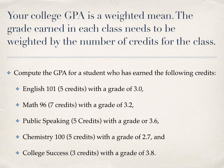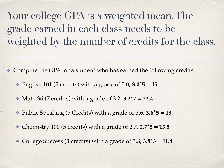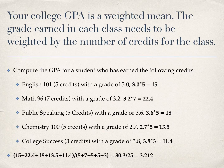Did you pause? A weight of 5 for the English class multiplied by 3.0 gives you 15. Likewise, 3.2 times 7 is 22.4. Doing the same for all five classes, adding them up, and dividing by the sum of the weights gives us 3.212. So 3.212 would be the weighted mean, which is your college GPA in this case.